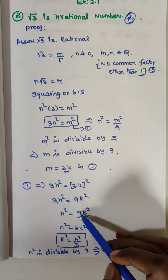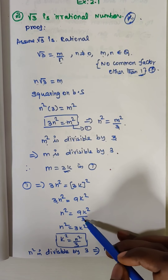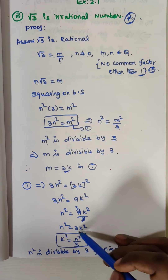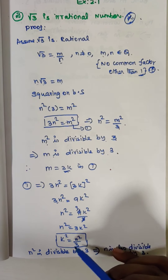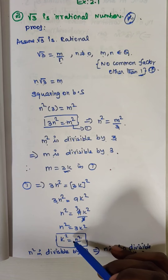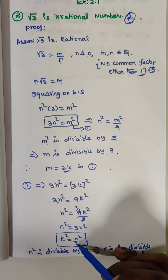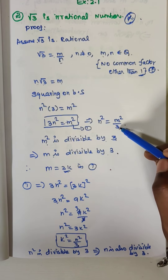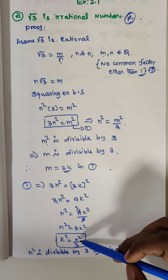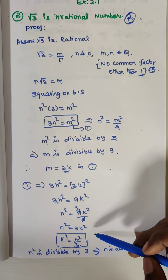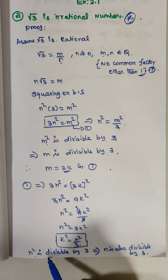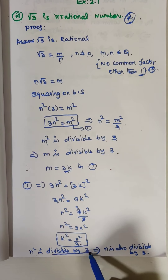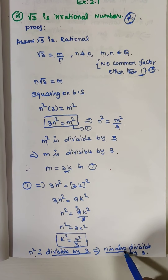Now n squared is equal to 9k squared divided by 3, which gives n squared equal to 3k squared. So k squared is equal to n squared divided by 3. Therefore n squared is divisible by 3, and so n is also divisible by 3.